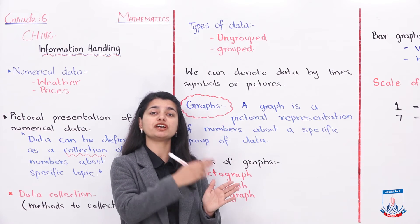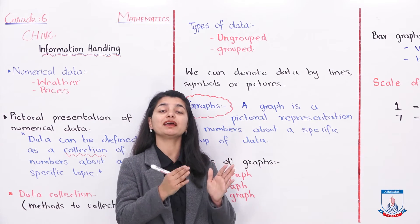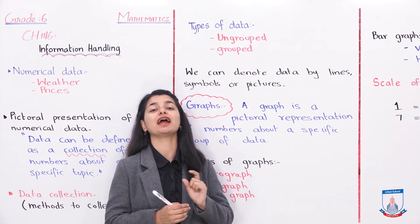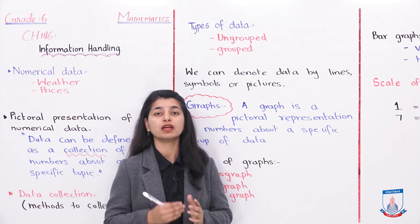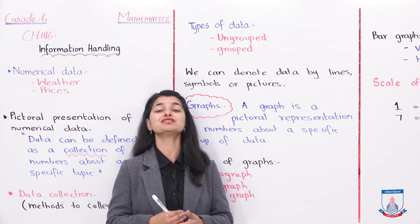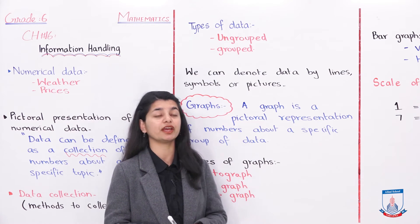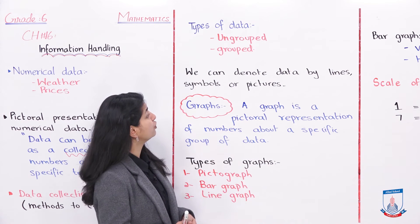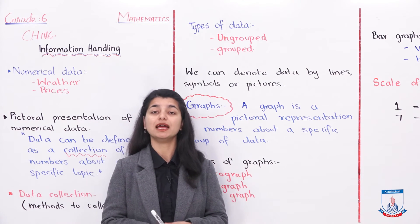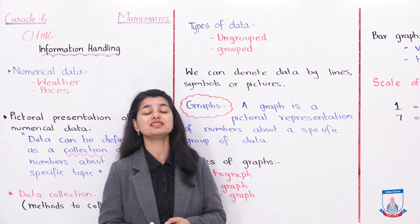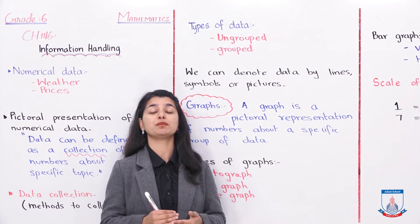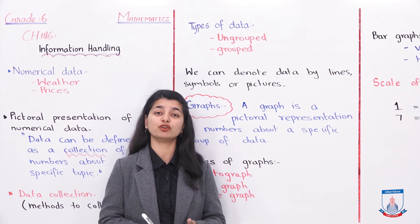So we identify grouped and ungrouped data and express them. We can denote data by lines, symbols, or pictures. Line charts are used; you can also use symbols and pictures. These are all different ways in which you can express the entire data, whether it is grouped or ungrouped.